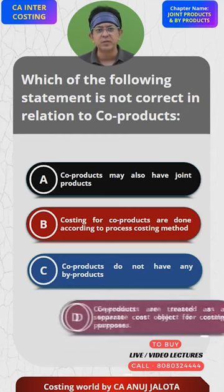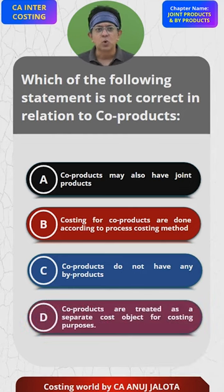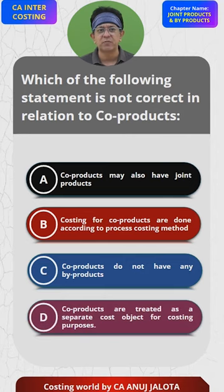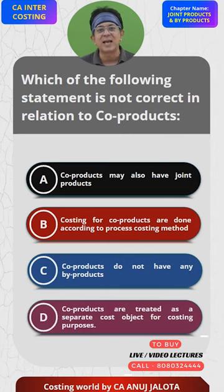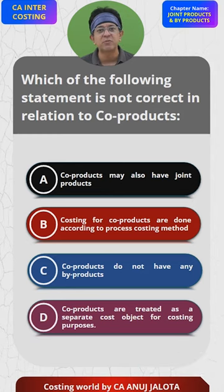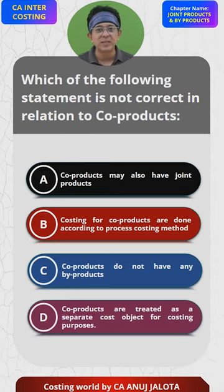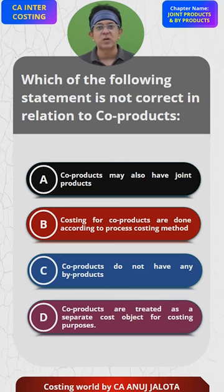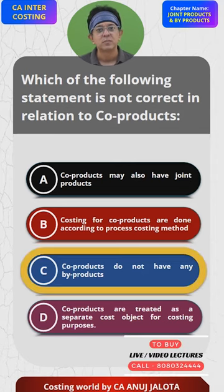Option D: Co-products are treated as separate cost objects for costing purposes. Yes, they are treated as separate cost objects — we try to find out the separate cost of each co-product. So the statement that is not correct is C, and the answer is C.